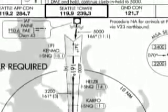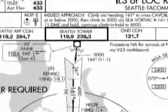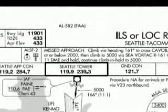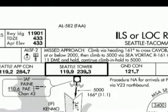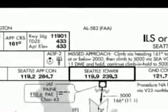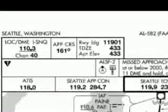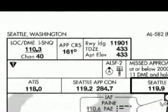Furthermore, they also list missed approach procedures and commonly used radio frequencies. So perhaps the best way to talk about the features of an approach plate is by working from the top left to the bottom right. So let's look at the top row.